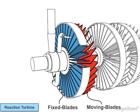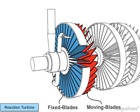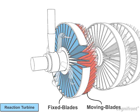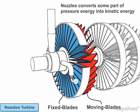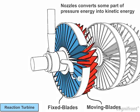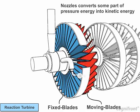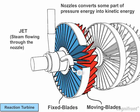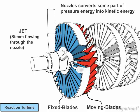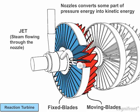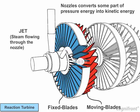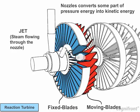Now let us focus on the working of the reaction turbine. In this turbine, the nozzles are attached with the guide wheel. These nozzles convert some part of the pressure energy into kinetic energy. The steam flowing through the nozzle is called a jet. This jet is passed through the moving blades with pressure and kinetic energy.